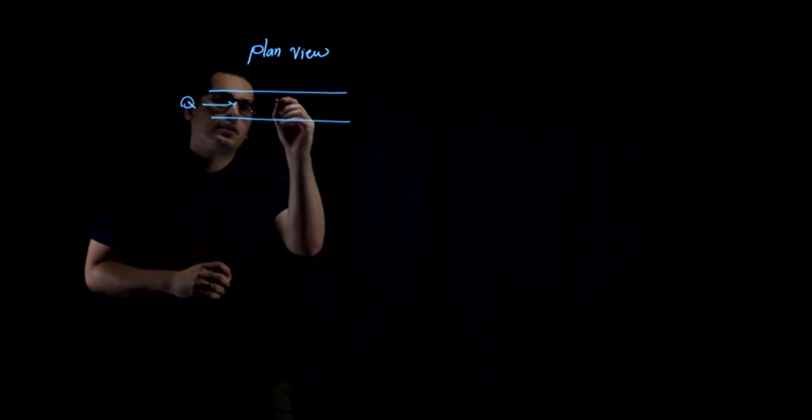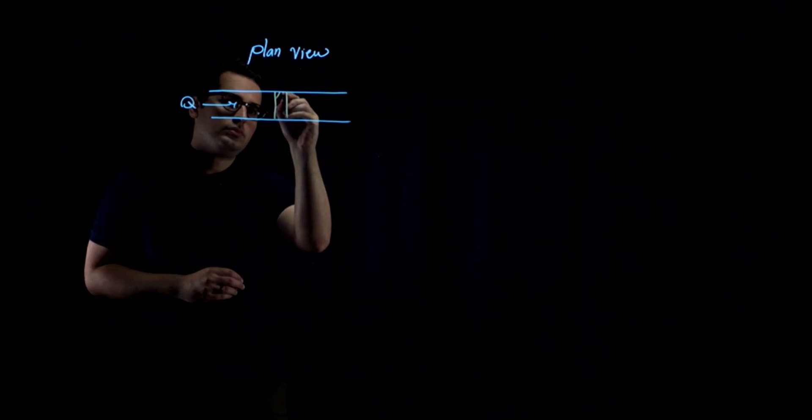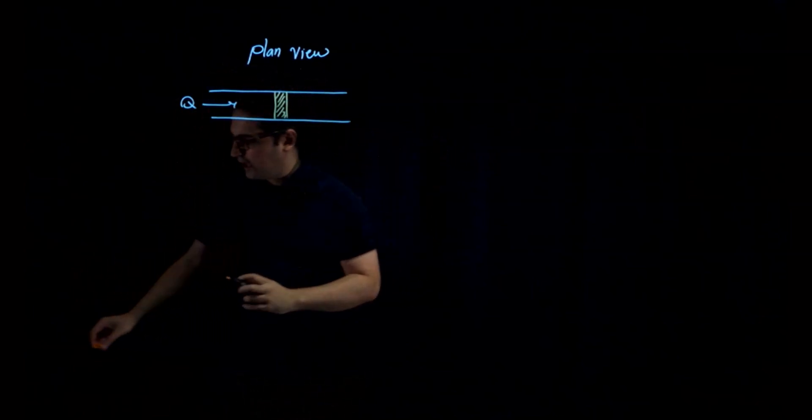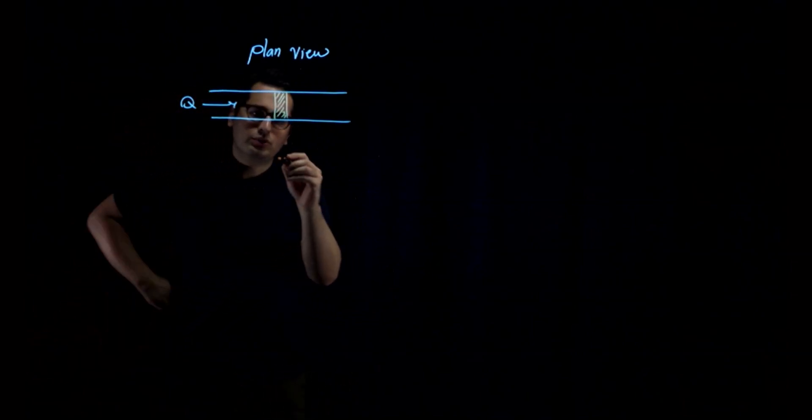When I install a weir right across this channel, water is going to change course. How does it do that? Let me actually show you.